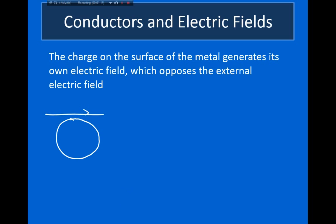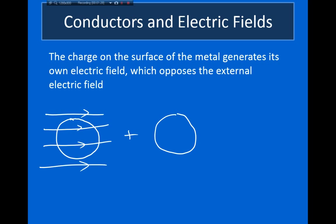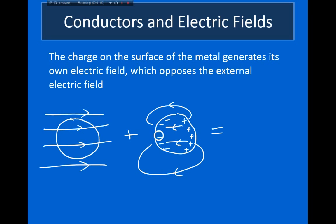So we've got this metal conductor, and there are these electric field lines which point to the right. There's also another electric field that's actually caused by the charge on the surface of the metal. We get this negative charge that forms on the left side and a positive charge forming on the right side, and this charge on the surface is actually creating an electric field of its own inside the metal. The electrons inside the metal will continue to move in response to this external force until the electric field caused by the surface charges cancels the external electric field inside the conductor.